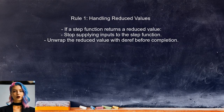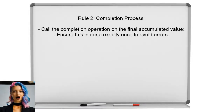Let's discuss the first rule regarding reduced values. If a step function returns a reduced value, the user must ensure that no more inputs are supplied to that step function. Once a reduced value is returned, the process should stop feeding it more data. Moving to the second rule about the completion process: the user must call the completion operation on the final accumulated value exactly once. This ensures the transducer finishes processing correctly without any unintended side effects.